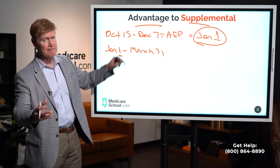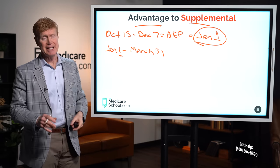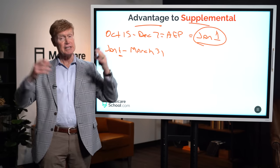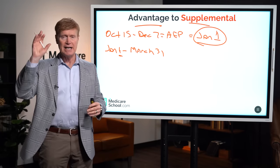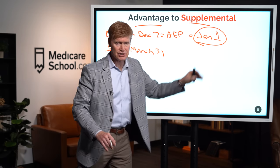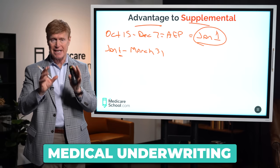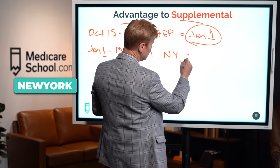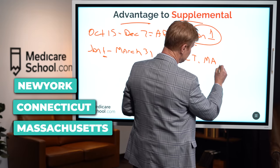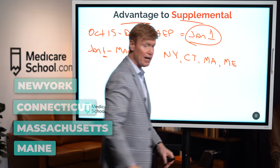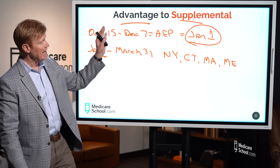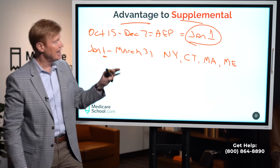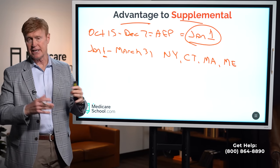The biggest mistake here is not realizing that if you've been on an advantage plan for any length of time — one, two, three, four, or five years — and you want to move to a supplemental plan, you will have to go through medical underwriting. There are exceptions: New York, Connecticut, Massachusetts, and Maine allow you to move from advantage to supplemental with no underwriting, though timing rules vary.